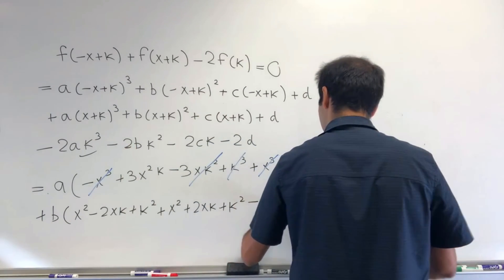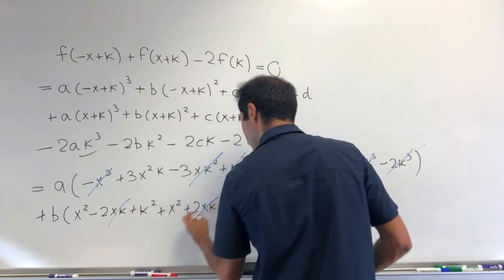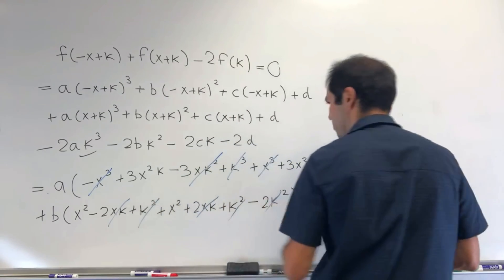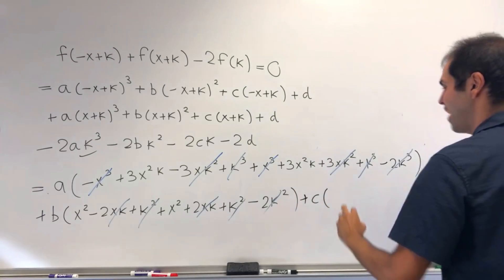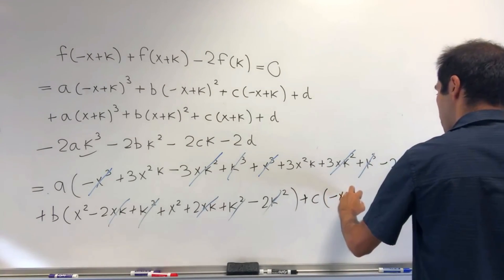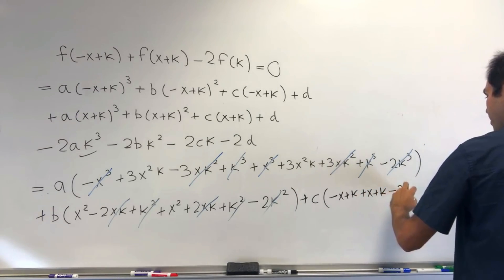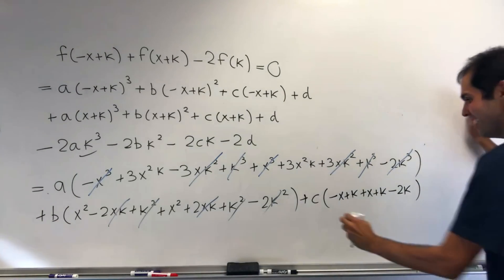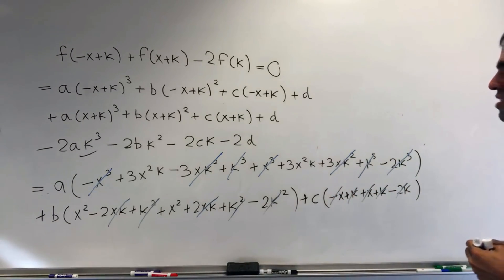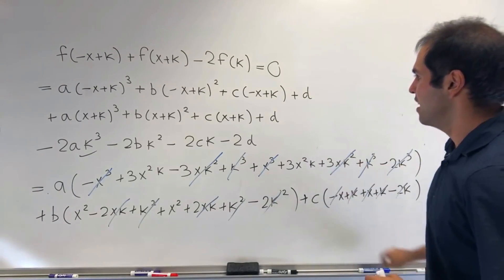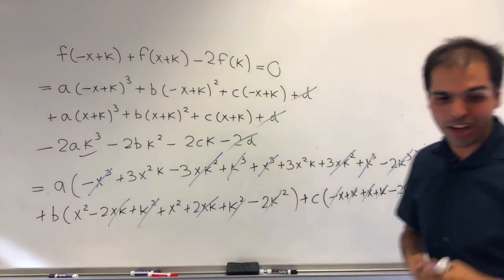For the b terms: (minus x plus k) squared plus (x plus k) squared minus 2k squared — all terms cancel. For the c terms: (minus x plus k) plus (x plus k) minus 2k — the x's cancel and the k's cancel, so there's no c term remaining. And for d: d plus d minus 2d, which also cancels out.